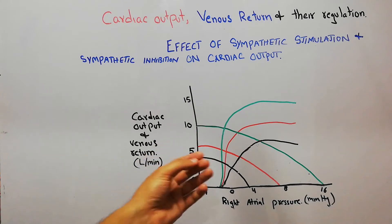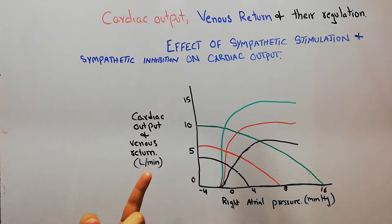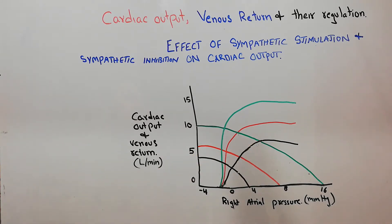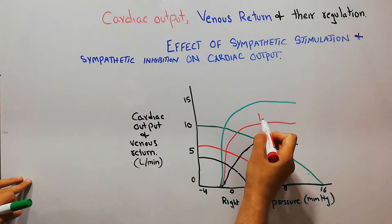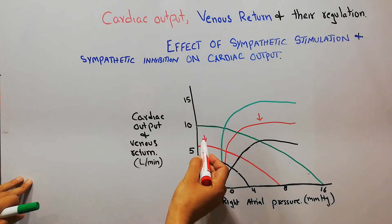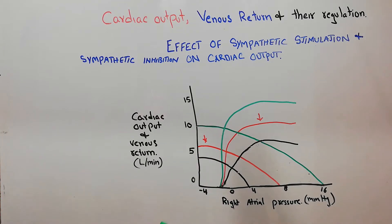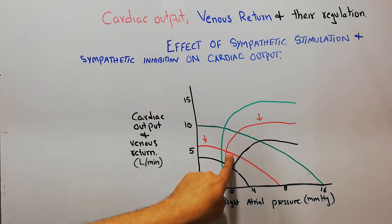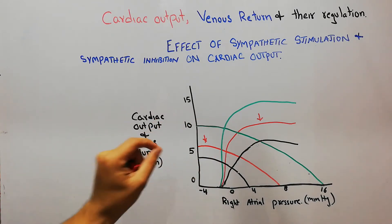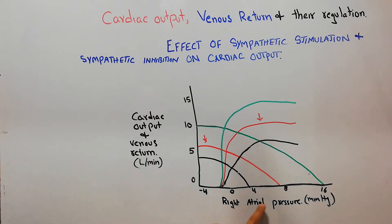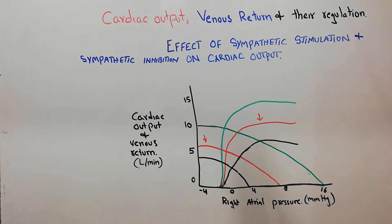With the same cardiac output and venous return curves, we have discussed that the normal cardiac output curve and the normal venous return curve meet each other at a point where cardiac output equals venous return, and at that exact point the right atrial pressure is zero or around zero millimeter of mercury.